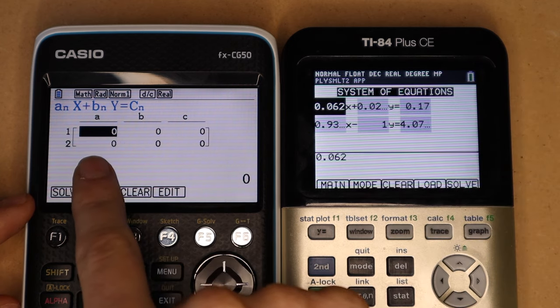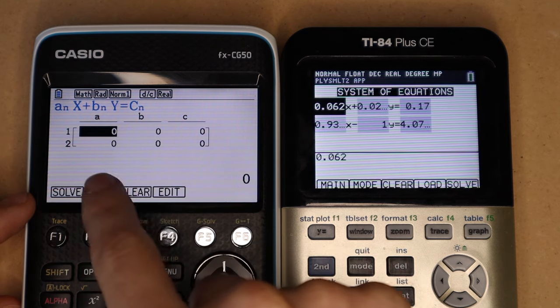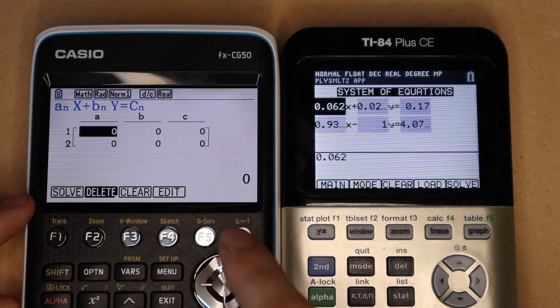Whereas on the Casio, it's more in a matrix form. You have the equation laid out up here for reference, but then down here, it's just a simple matrix that you enter the values in.